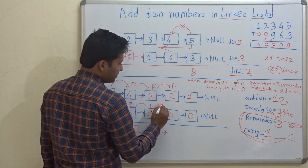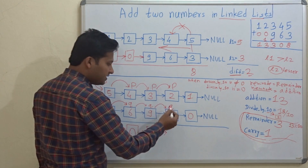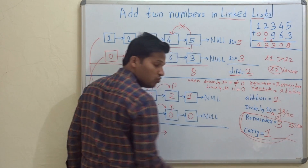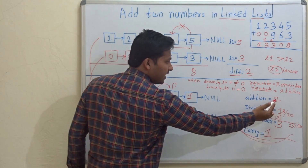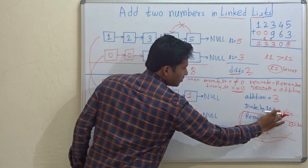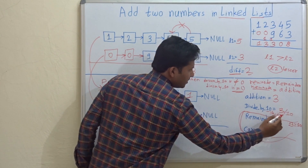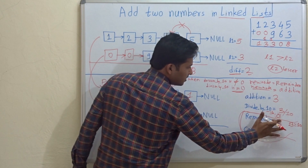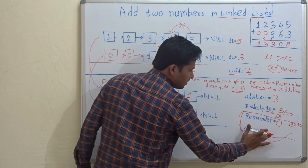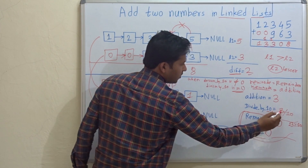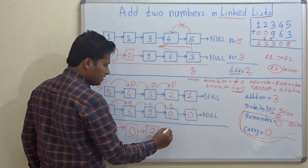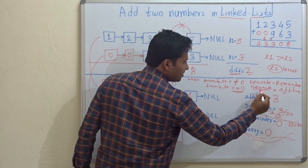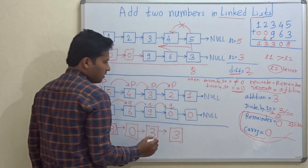P and q go ahead. Now 2 plus 0 is 2. Addition is updated to 2. As the carry is non-zero, it gets added, so addition becomes 3. So 3 divided by 10 is 0. Since the division is 0, we don't need remainder and carry — they are automatically 0, and carry becomes 0. Directly create a new node and write the addition, 3, in that node.